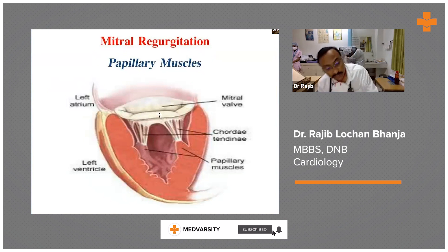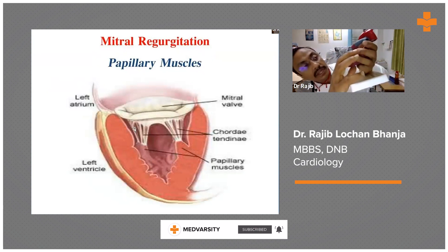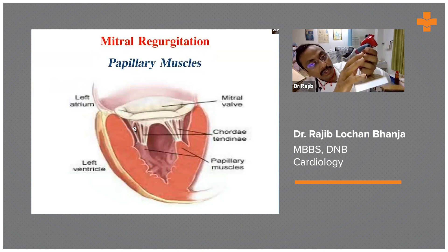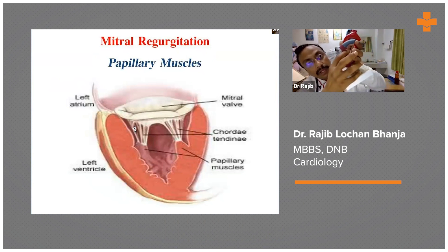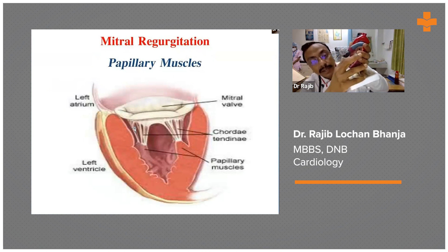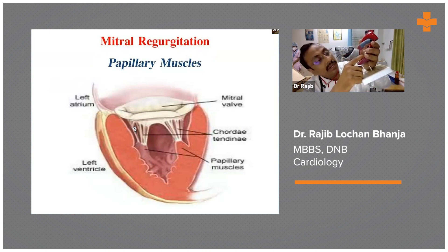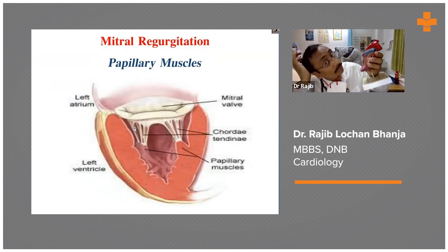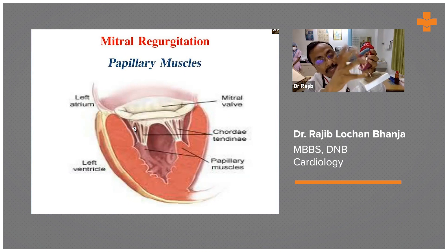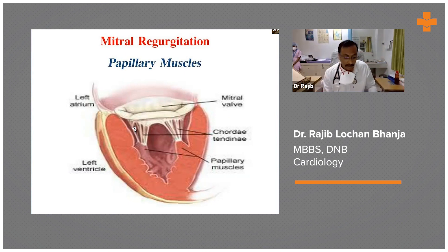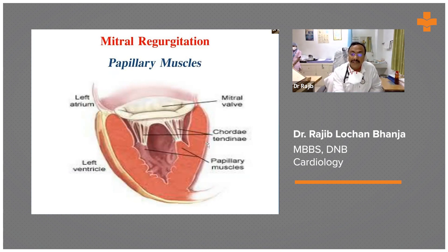In mitral regurgitation, if you see, this is the mitral valve. Why does mitral regurgitation occur? If the valve will not co-opt — not close — there are many causes: calcification, fibrosis, thrombus, trauma, and some fixing of the valve. Basically there is difficulty in co-aptation of the valve, which may be at the papillary muscle level, chordae level, or at the valvular level.